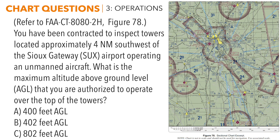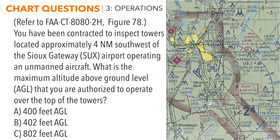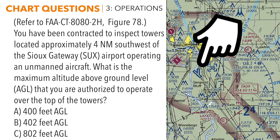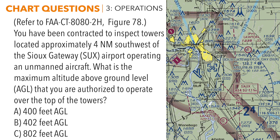This next question references figure 78. You've been contracted to inspect towers located approximately four nautical miles southwest of Sioux Gateway Airport operating an unmanned aircraft. What is the maximum altitude above ground level that you are authorized to operate over the top of the towers? First, find Sioux Gateway Airport — we see the blue information block, and that corresponds to the blue airport next to it with a runway configuration that looks like a Y. Now we need to find our location four nautical miles southwest.